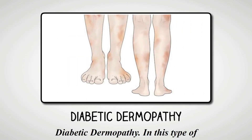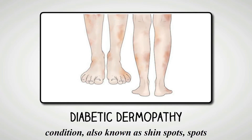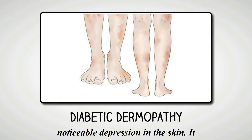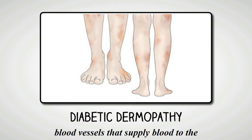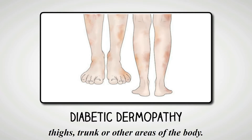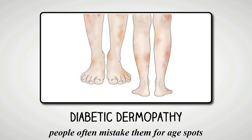Diabetic Dermapathy. In this type of skin condition, also known as shin spots, spots develop that create a barely noticeable depression in the skin. It happens as a result of changes in the blood vessels that supply blood to the skin. The spots usually develop on the shins, but can also occur on the arms, thighs, trunk or other areas of the body. As the spots typically cause no symptoms, people often mistake them for age spots.